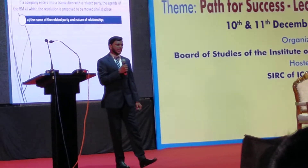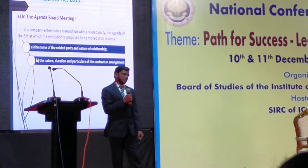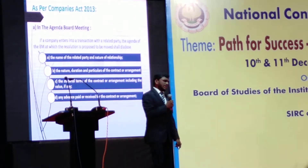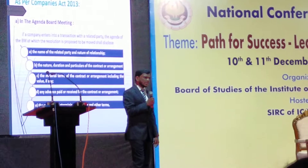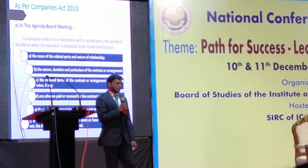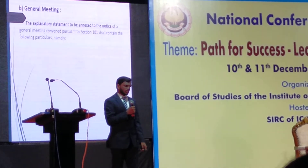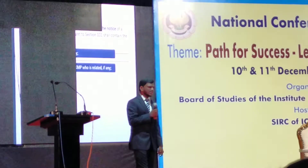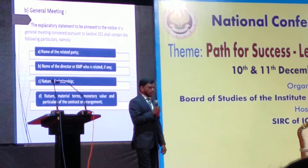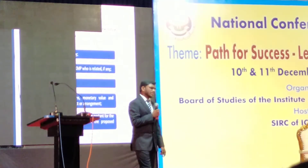In the agenda of the board meeting, the company has to discuss: the name of the related party and the nature of the relationship; the nature, duration, and particulars of the contract or arrangement; the material terms of the contract or arrangement including the value, if any; any advance paid or received; the manner of determining the pricing and other terms; and whether all factors relevant to the contract have been considered. In the explanatory statement to the notice of the general meeting, the company must disclose: the name of the related party; the name of the director or key managerial person who is related, if any; the nature of the relationship; material terms; monetary value; particulars of the contract or arrangement; and any other information relevant for members to take a decision on the proposed resolution.